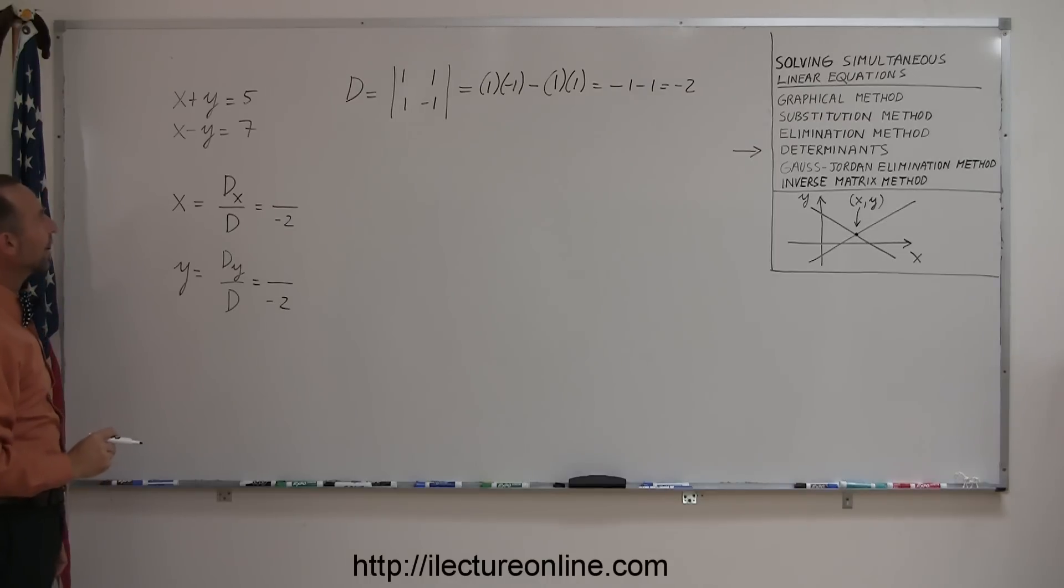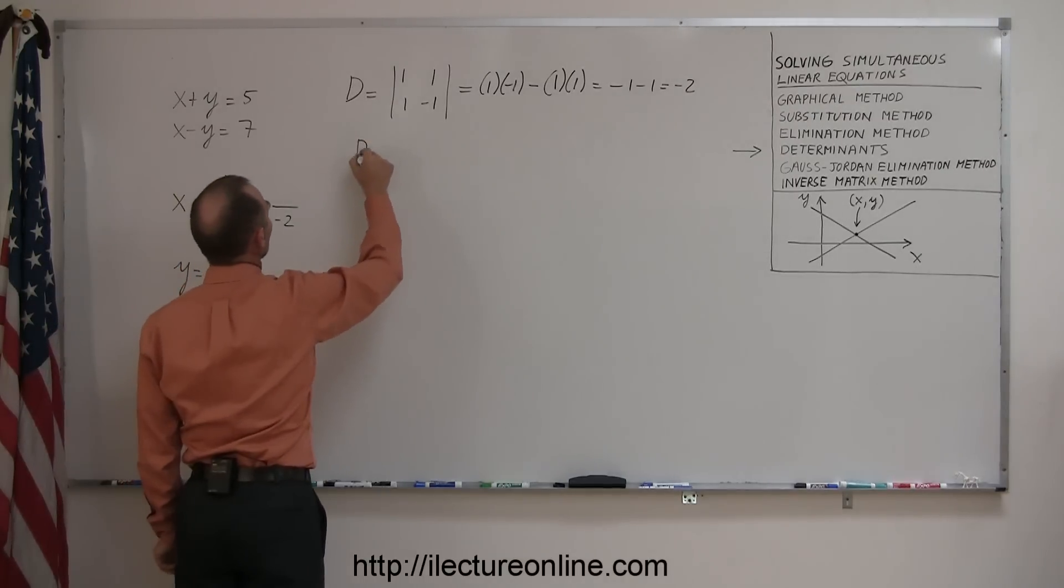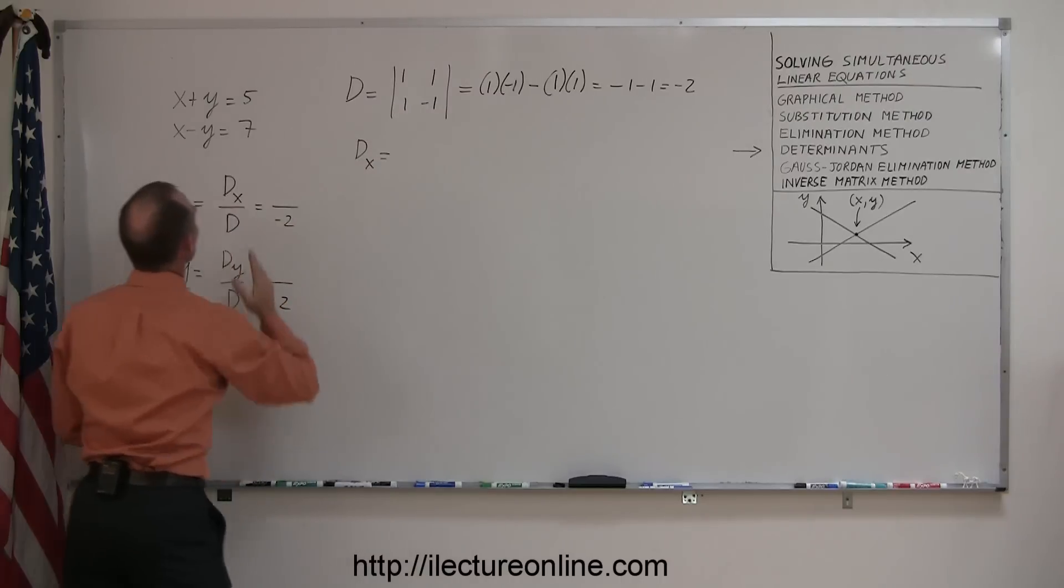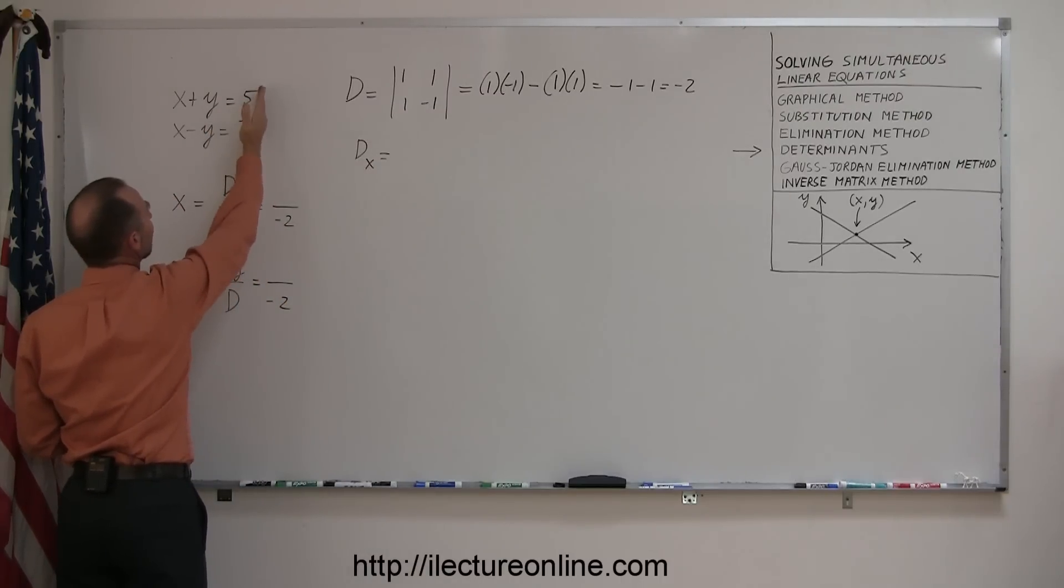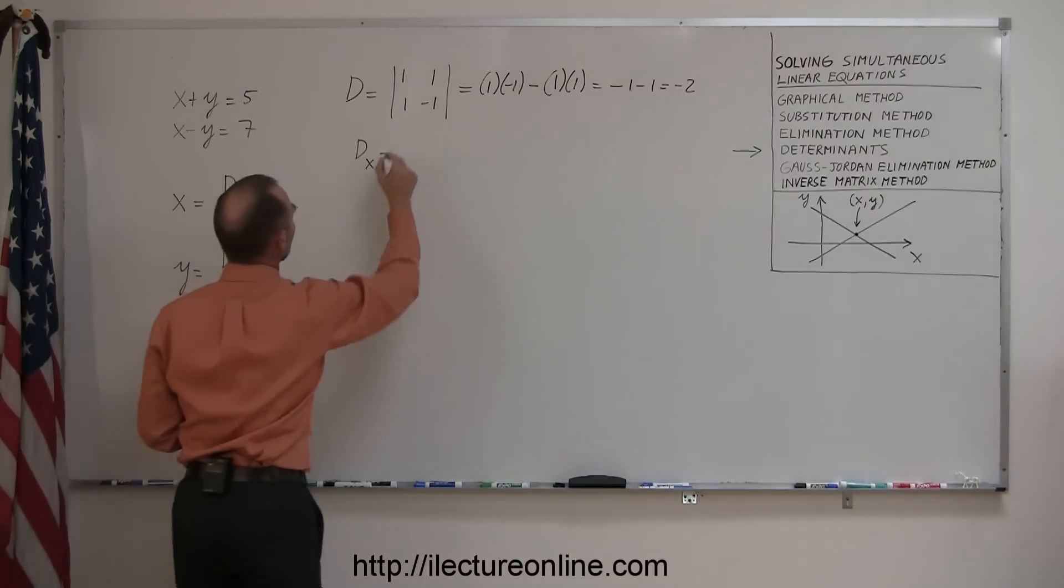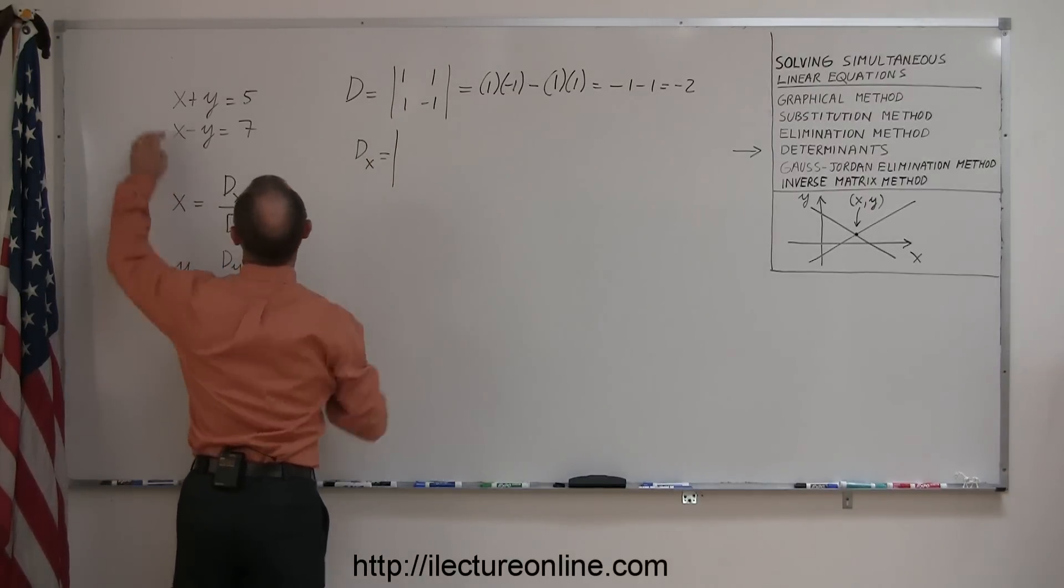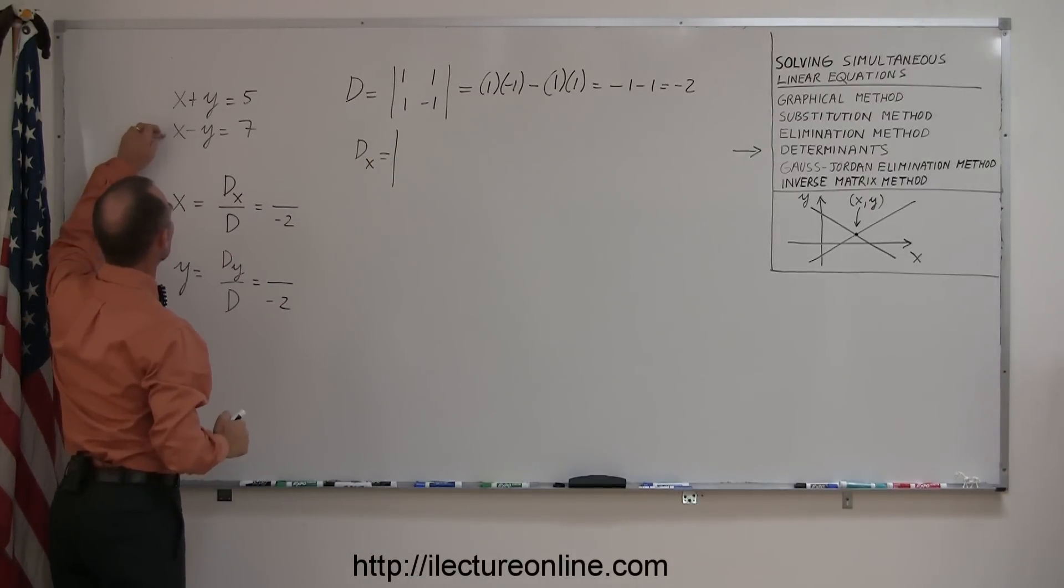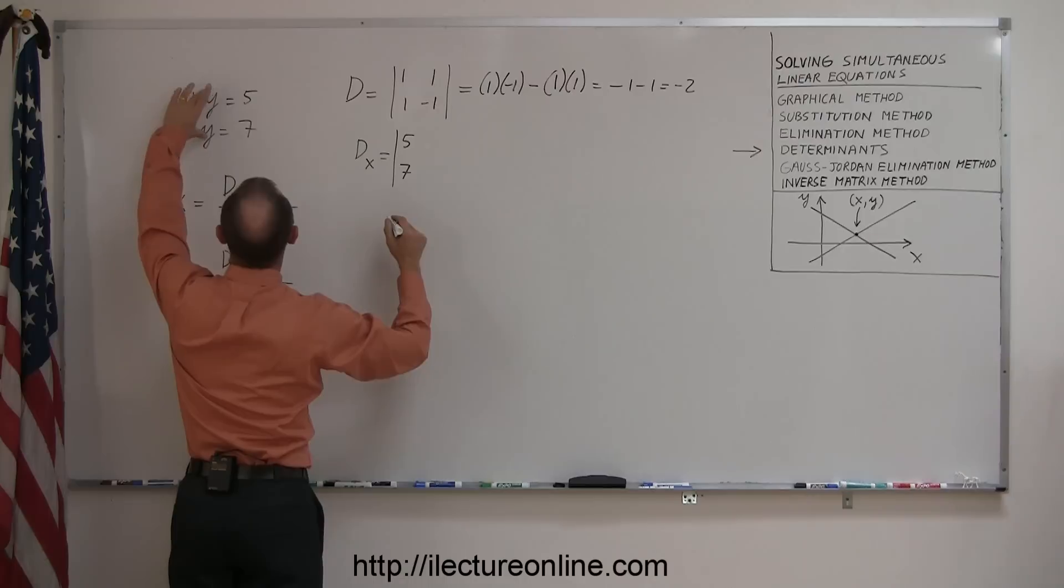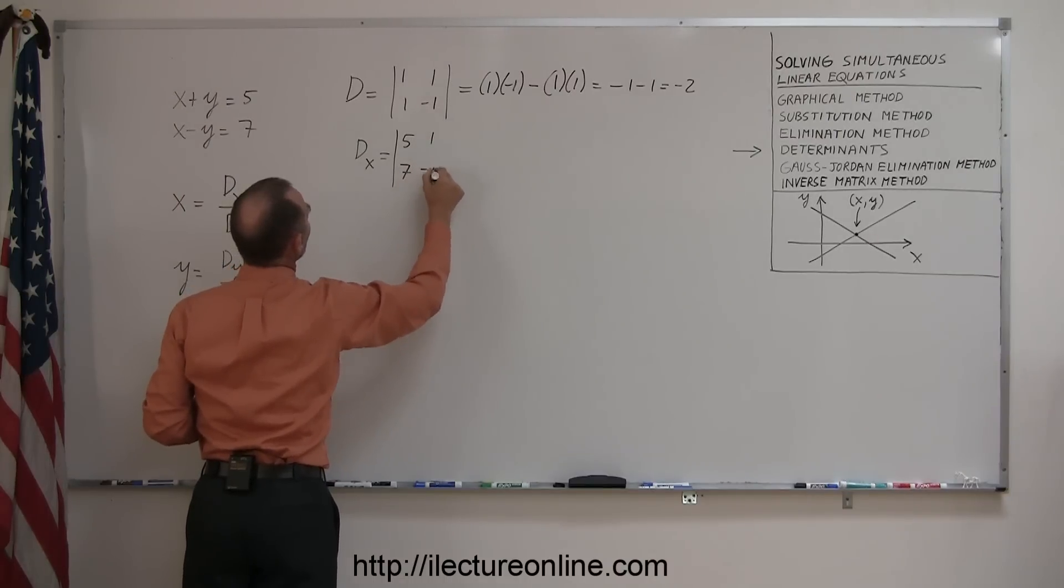Now we have to find d sub x and d sub y. The d sub x is equal to the same determinant, except the numbers on the right side of the equal sign replace the coefficients of x. So instead of writing 1 and 1 for the coefficient of x, we're going to replace them with 5 and 7. We keep the coefficients of y: 1 and negative 1.